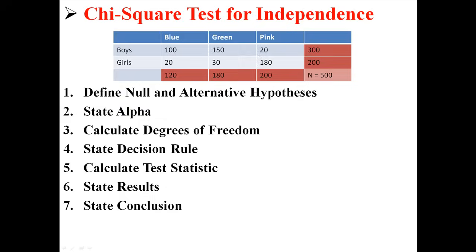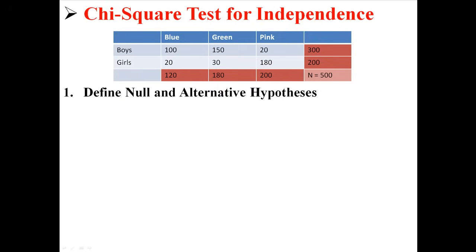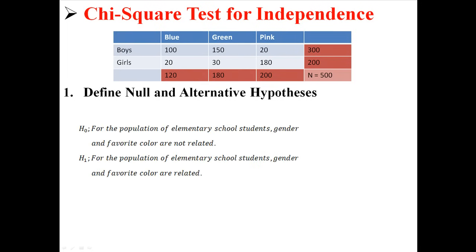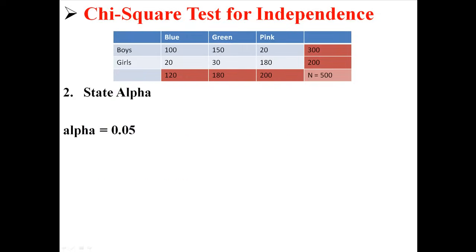We are going to do a hypothesis test using these same seven steps that we always do. So step one is for us to state our null and alternative hypotheses. Our null is that for the population of elementary school students, gender and favorite color are not related. Our alternative hypothesis is that for the population of elementary school students, gender and favorite color are related. Now alpha is .05.